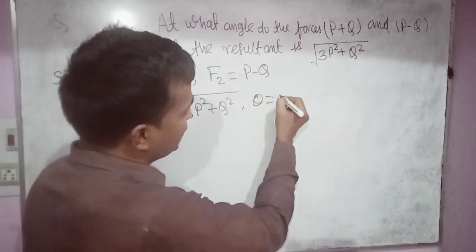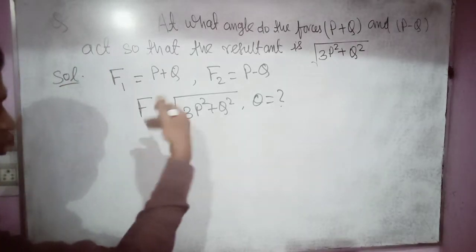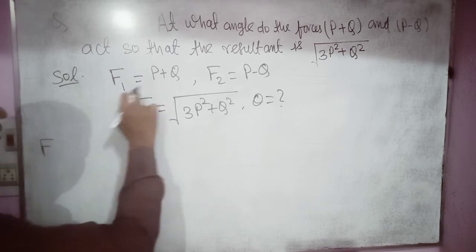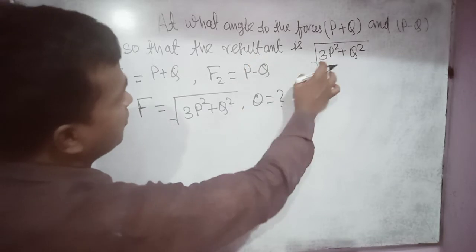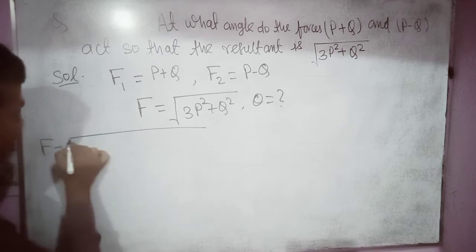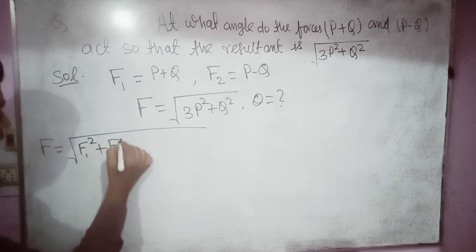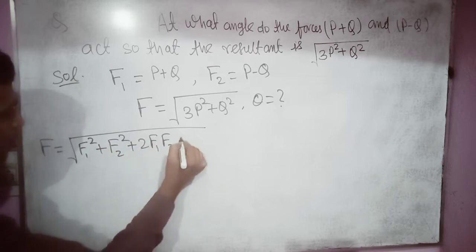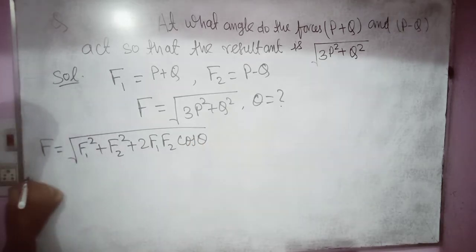We have to find angle theta. Now let us start solving this problem. Since F is the resultant of F1 and F2, F is equal to √(F1² + F2² + 2·F1·F2·cos θ). Let us put in the values.